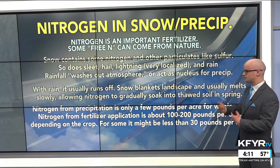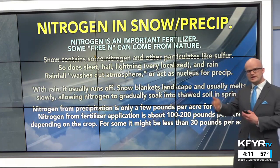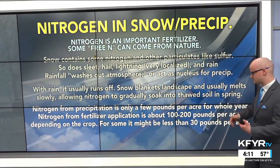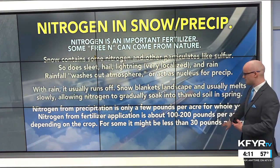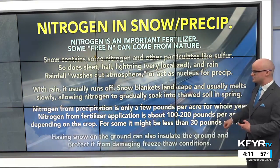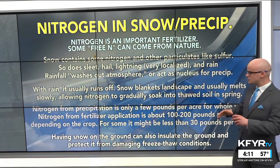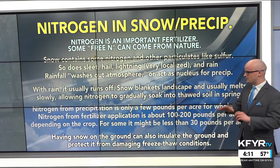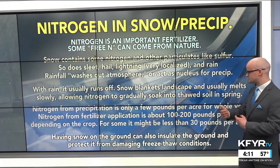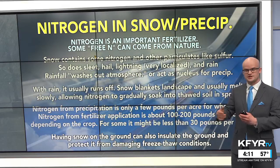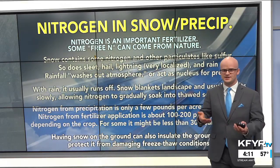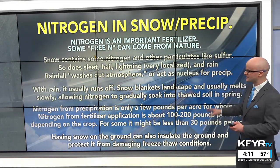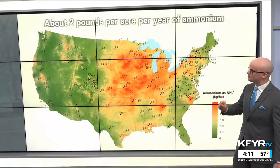Nitrogen from fertilizers applied to fields is about 100 to 200 pounds per acre per year depending on the crop. Wheat and corn usually see a little more nitrogen fertilizer, while some crops might need less than 30 pounds per acre per year. Having snow on the ground also insulates the soil and protects it from freeze-thaw cycles throughout winter — that's why it's important to have snowpack, and why this year it's a little concerning not having that snowpack on the landscape.